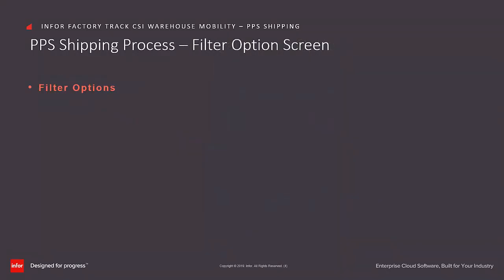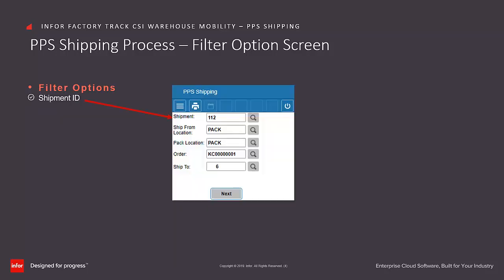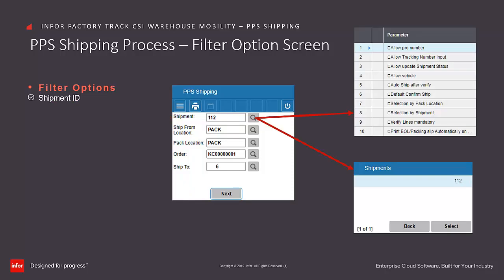The PPS shipping process is initiated by determining which shipment list to process. FactoryTrack offers several options to allow the user to search for the ship list from which to fill open customer orders. The most commonly used filter is the Shipment ID field, which is made available if the Selection by Shipment field is selected in the transaction set maintenance form.